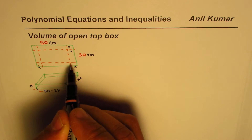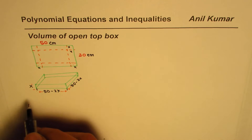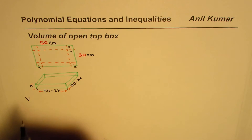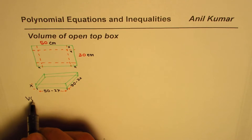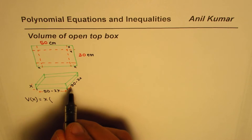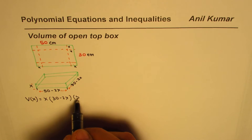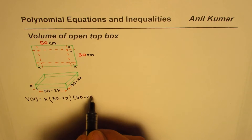Since x is removed from both sides, the length and width each decrease by 2x. Volume is the product of length, width, and height, so we can write the volume as a function of x: V(x) = x · (30 − 2x) · (50 − 2x).